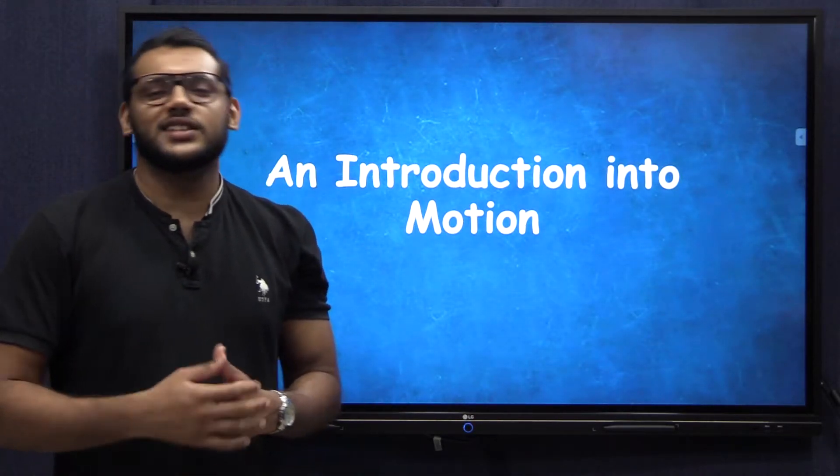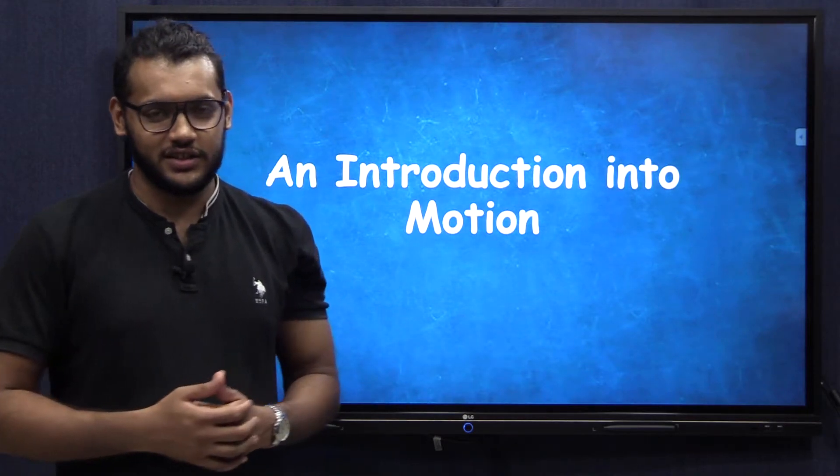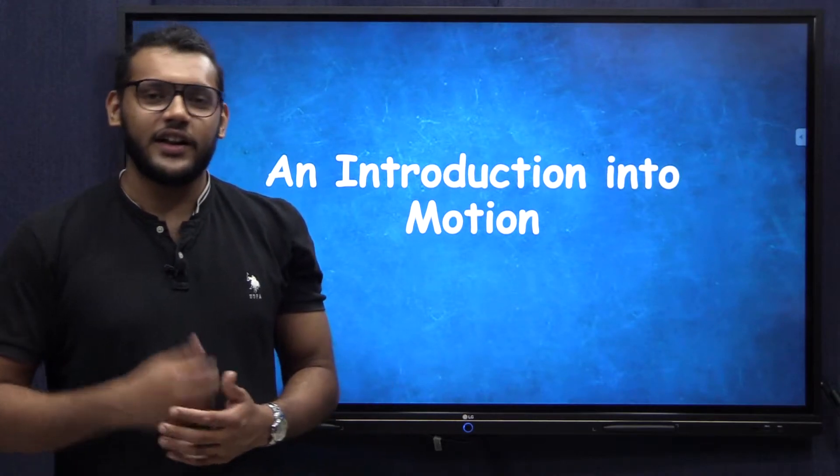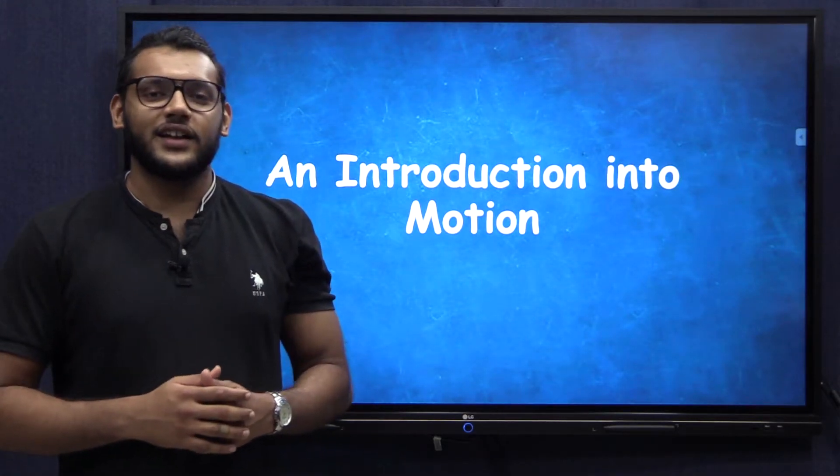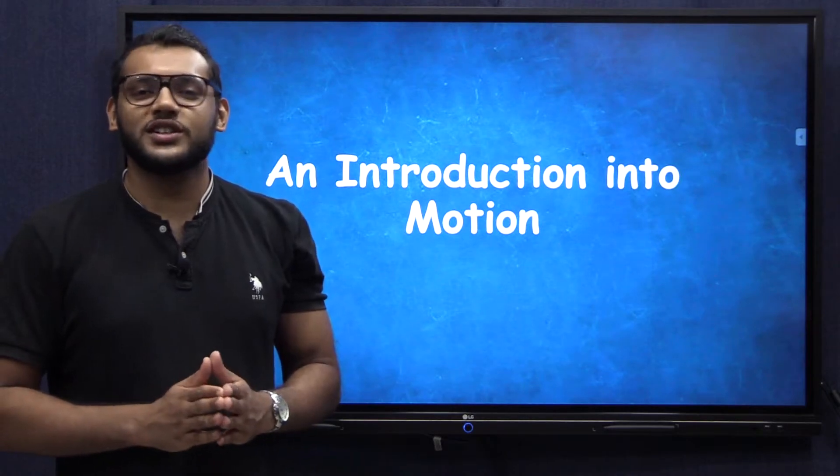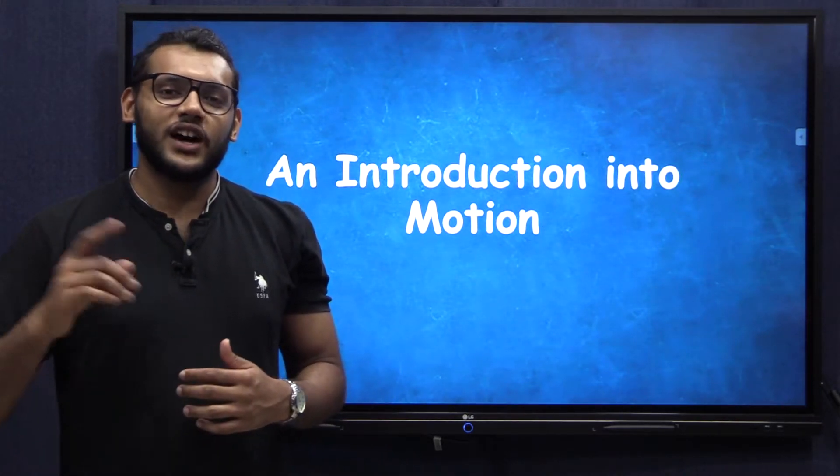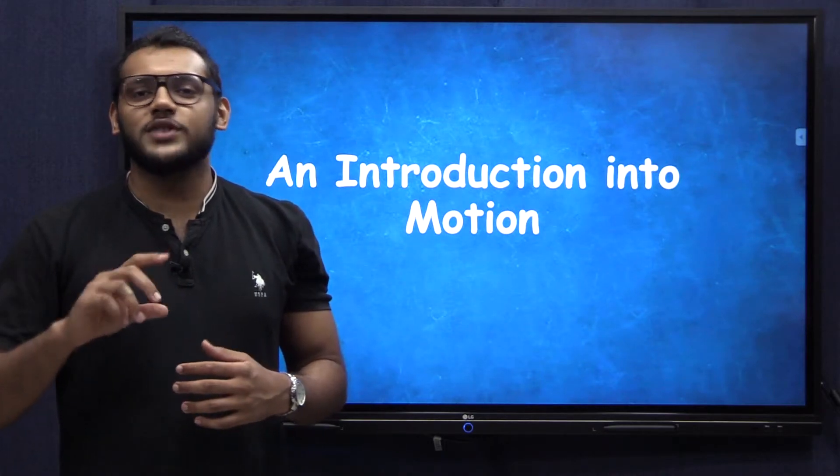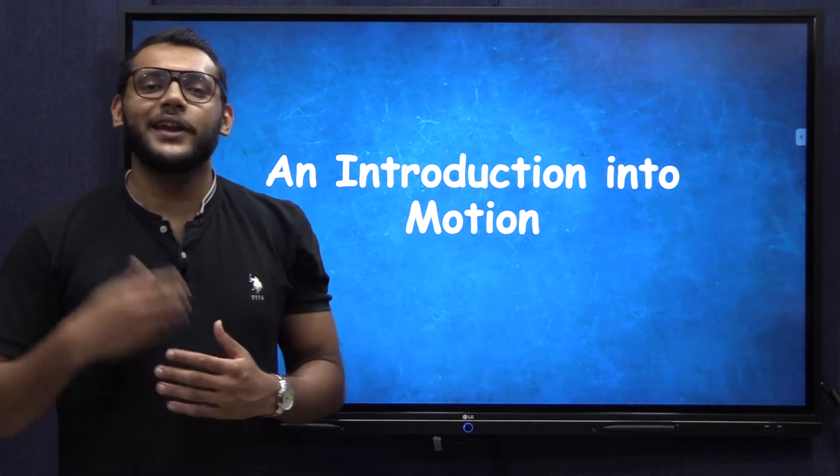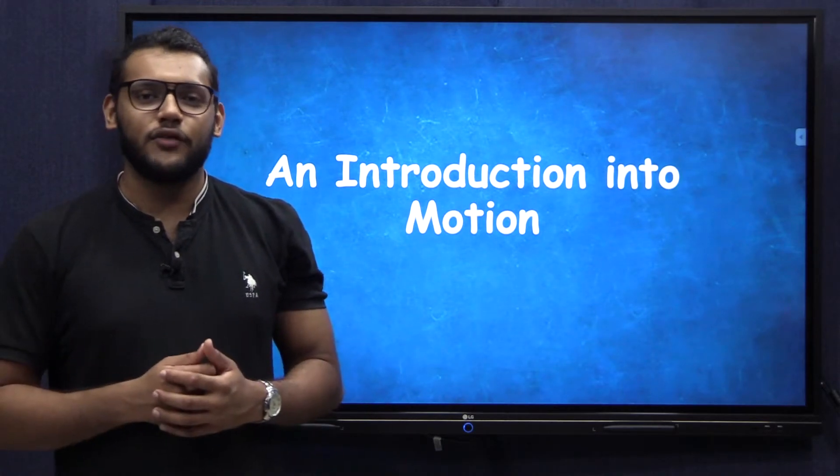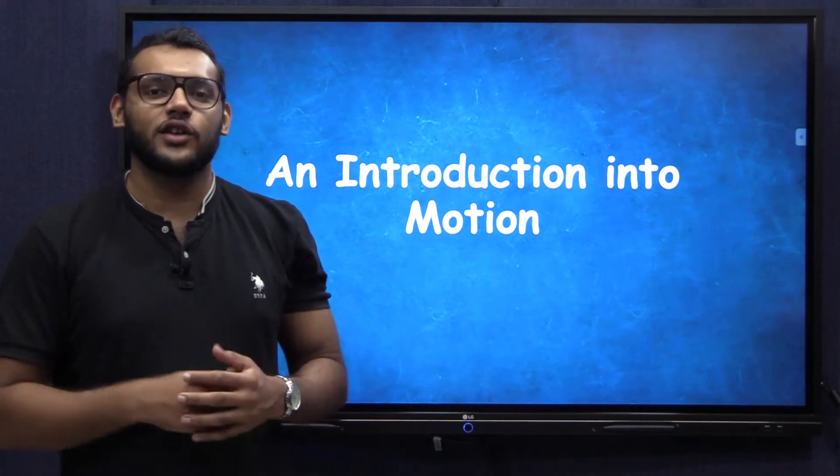So in class 6 we've discussed what motion is. If you don't remember, any object that is moving is said to be in motion. Now we also know that there are three main types of motion: motion along a straight line, circular motion, and periodic motion. Any motion that repeats itself after a period of time, for example a pendulum swinging in your clock.